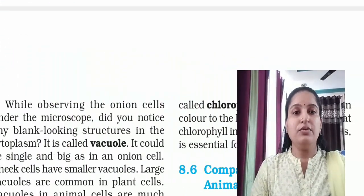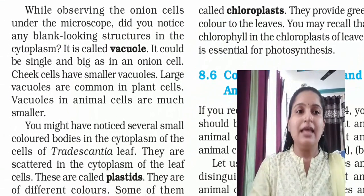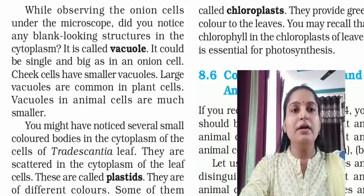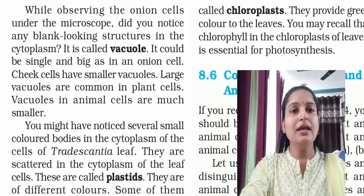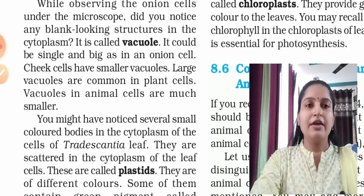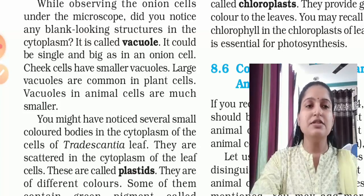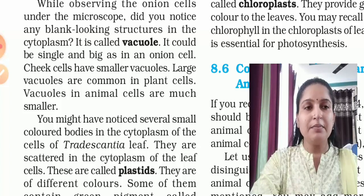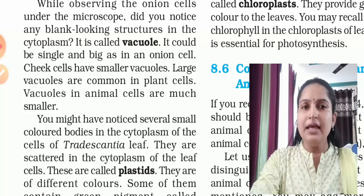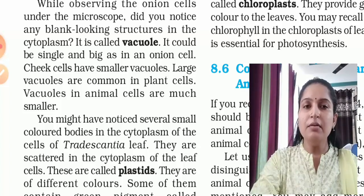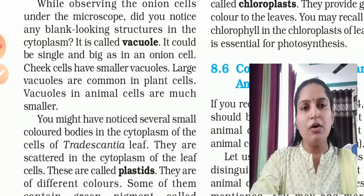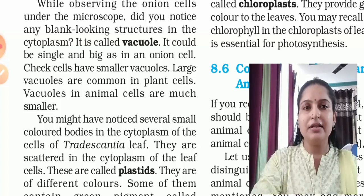While observing onion cells under the microscope, did you notice any blank-looking structure in the cytoplasm? It is called a vacuole. It could be single and big as in onion cells; cheek cells have smaller vacuoles. Large vacuoles are very common in plants, while vacuoles in animals are much smaller.